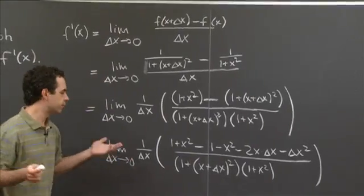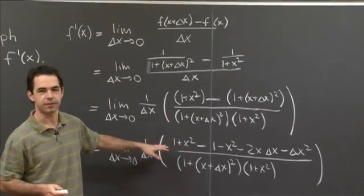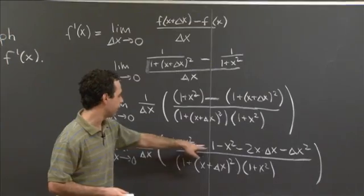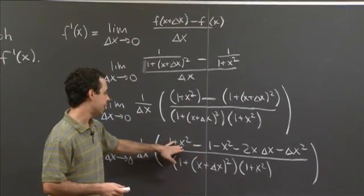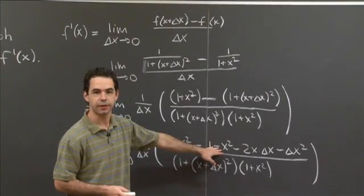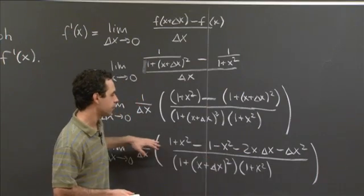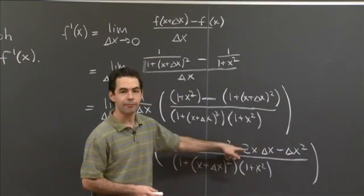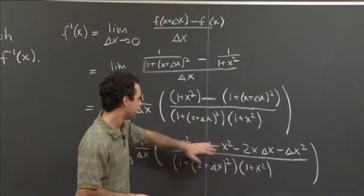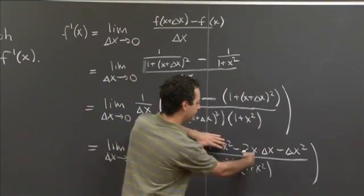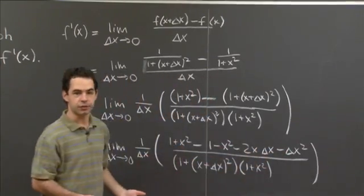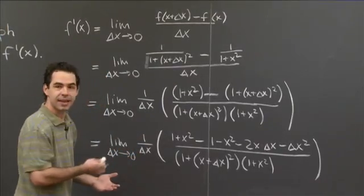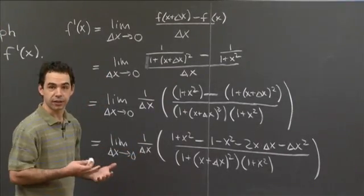So (1 + x²) minus, if you expand out (x + delta x)², using FOIL or the binomial theorem or however you like to multiply two binomials, we get minus 1 minus x² minus 2x times delta x minus delta x². That's the top. And we haven't changed the bottom. It's still (1 + x + delta x)² times (1 + x²). Now some nice stuff is starting to happen, which is this 1 and this minus 1 are going to cancel, and this x² and this minus x² are going to cancel. And then after we cancel those terms, we see that in the numerator here, everything is going to have a factor of delta x. These four are going to cancel, and we'll just be left with these two terms, both of which are divisible by delta x. So that's where this cancellation we've been looking for is going to come from.